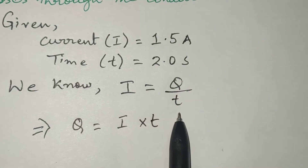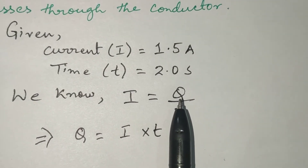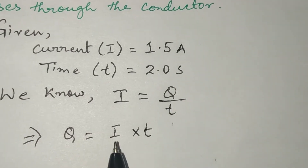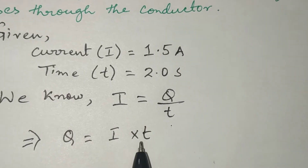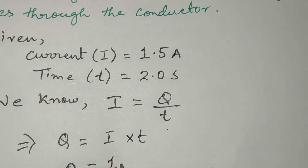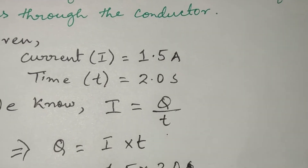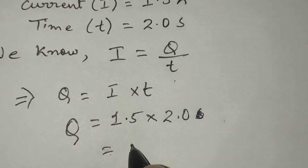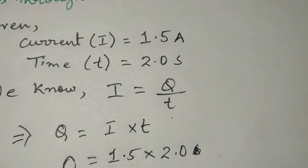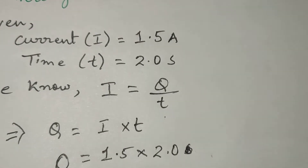We know that current is equal to charge per unit time, so I equals Q upon T. But we have to find out the charge which passes through the conductor. So we rewrite this equation in terms of Q: Q is equal to I into T. I is 1.5 ampere multiplied by time 2.0 seconds. So we get Q equals 3.0 Coulombs.